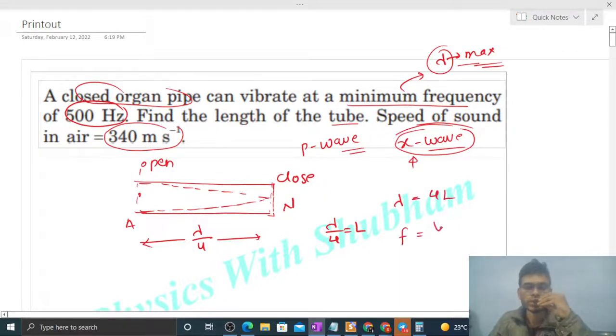So speed is given as 340 divided by wavelength, which is 4L. That is the value of frequency. And frequency is given as 500 Hertz. So from here, length will be 340 divided by 4 into 500. So this becomes 340 over 2000, right?